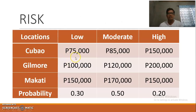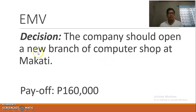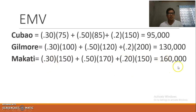For decision making under risk, multiply each payoff by its assigned probability. For Cubao: 75,000 times 0.3 for low, 85,000 times 0.5 for moderate, and 150,000 times 0.2 for high. After computing the expected values for all alternatives, the highest expected value is 160,000. Therefore the company should open a new branch at Makati, as it has the highest computed expected value.